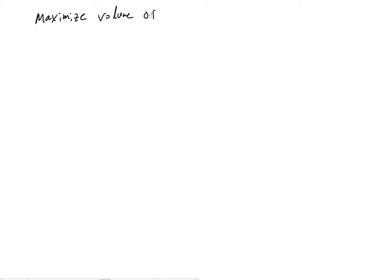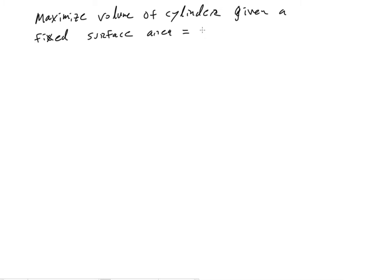So what I'm going to talk about now — I'm going to do one more example. Problem two is going to be maximizing the volume of a cylinder given a fixed surface area. We're going to say that surface area is equal to 4π.